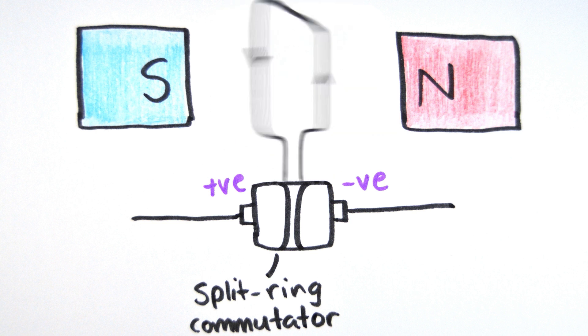You can make the motor go faster by either increasing the current or by using a stronger magnetic field.